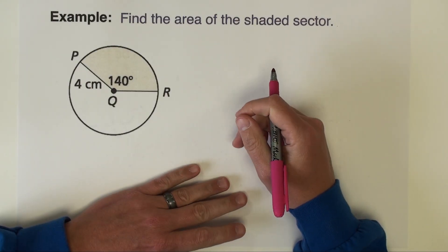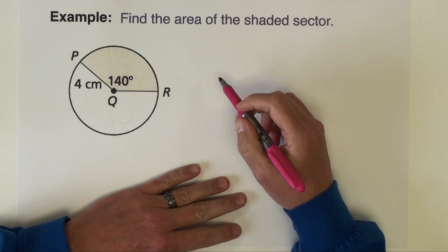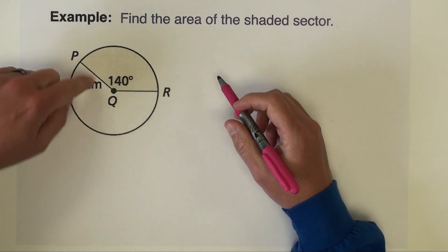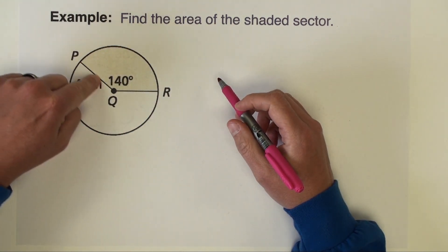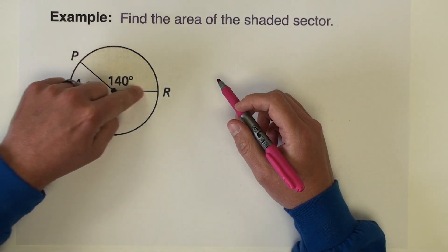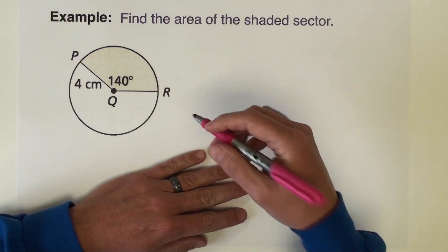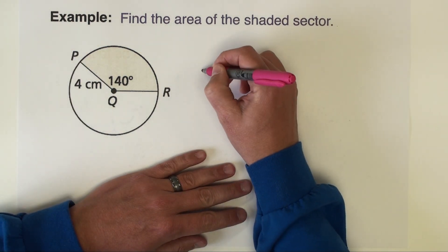Okay, first example problem. We're asked to find the area of the shaded sector, and the shaded sector is this part right here. It's this small 140 degree slice of this circle. My proportion is going to look like this. I want the area of sector, and we're just going to call this sector P Q R.